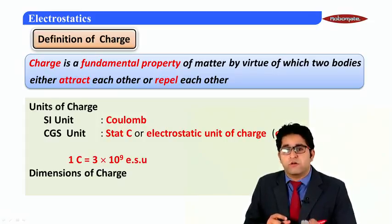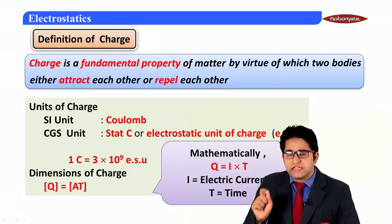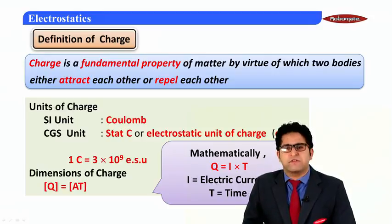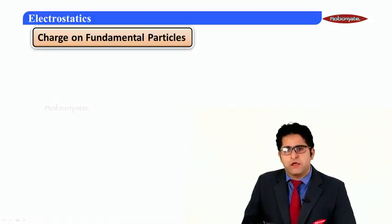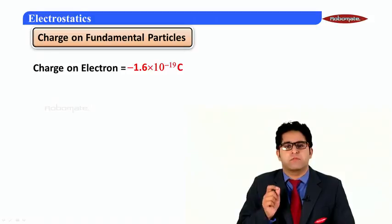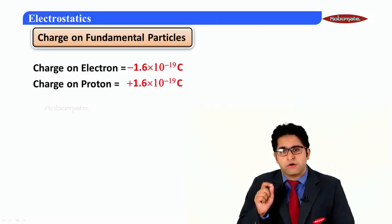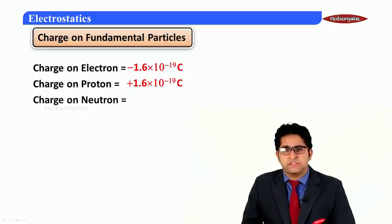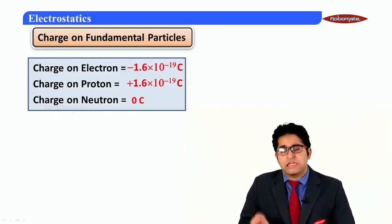The formula for charge is Q = IT, where I is electric current and T is time. Using this, the dimensions of charge are A¹T¹. The three fundamental particles are electron, proton, and neutron. The charge on an electron is −1.6 × 10⁻¹⁹ coulomb, on a proton is +1.6 × 10⁻¹⁹ coulomb, and on a neutron is 0 coulomb.